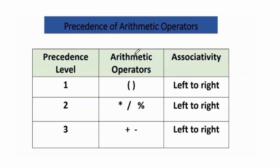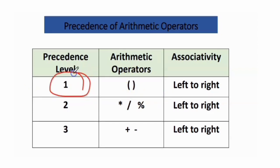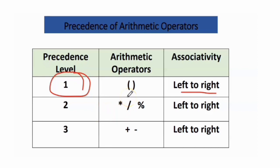Next, the precedence of arithmetic operators. The first level is parentheses — you must evaluate those first, with associativity from left to right. The second level is multiplication, division, and modulus — also evaluated left to right.